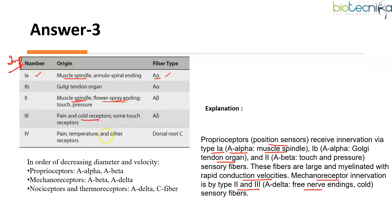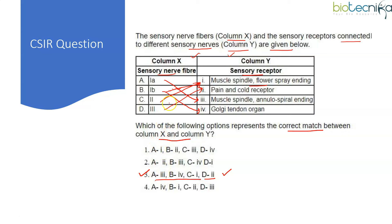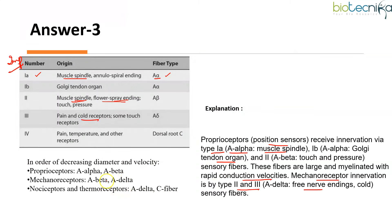To remember the order of decreasing diameter and velocity: proprioreceptors are A-alpha, A-beta; mechanoreceptors are A-beta, A-delta; nociceptors and thermoreceptors — which sense damage, injury, and temperature changes — use A-delta and C fibers. The fourth type matches with pain, temperature, and other receptors.